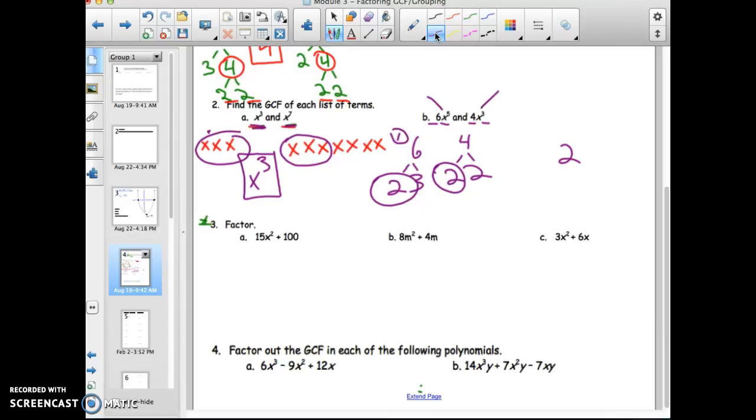Now, let's do the variables. This, x to the fifth, has five x's. And this has three x's. So the only thing in common, the biggest number of x's that is in common, is indeed three x's. So I'm left with the GCF of two x cubed.